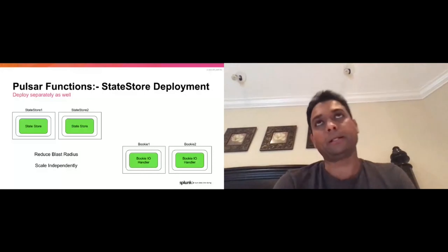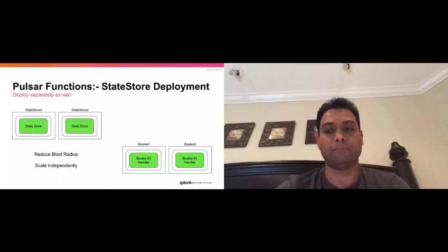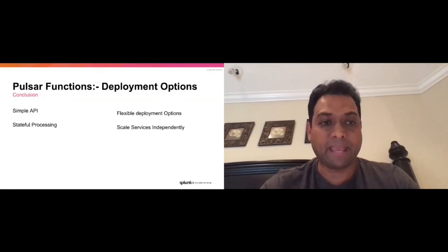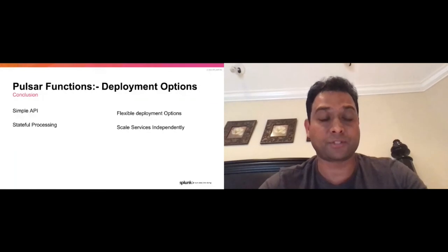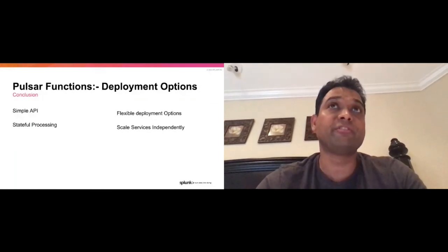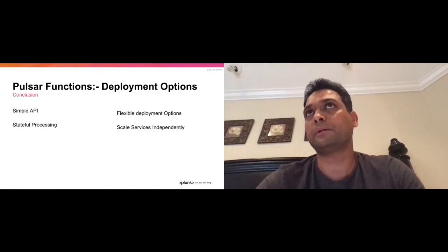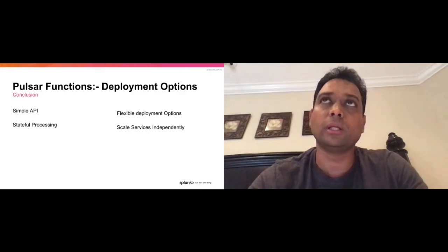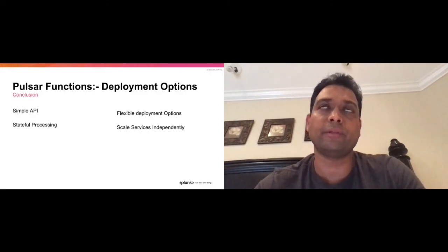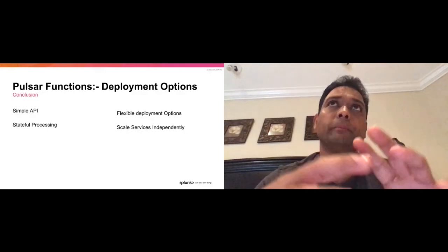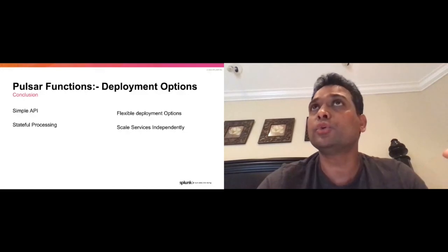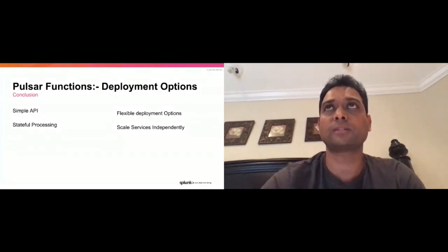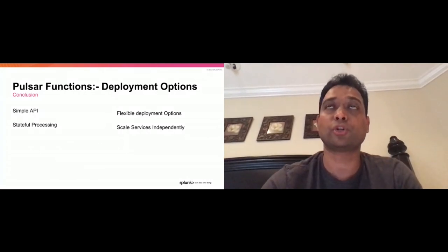The TLDR: the main things functions offer are a very simple API that allows stateful processing, and very flexible deployment. You can run them as threads, run them as processes, run them as Kubernetes, and scale them separately if you want. That's the beauty of Pulsar Functions — you're not tied to just one model. You can mix and match according to use cases, take it as low as possible with the thread model and deploy it in a few hundred megabytes IoT box, or scale it in a large cluster and manage and scale independently.